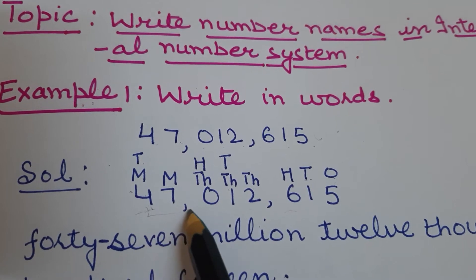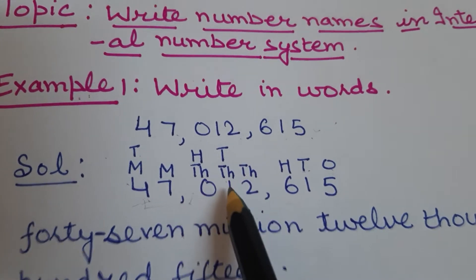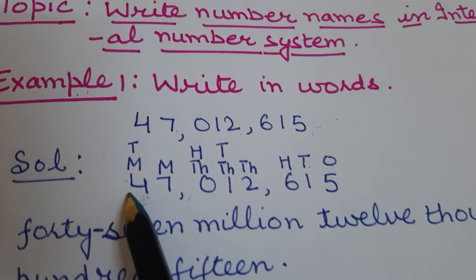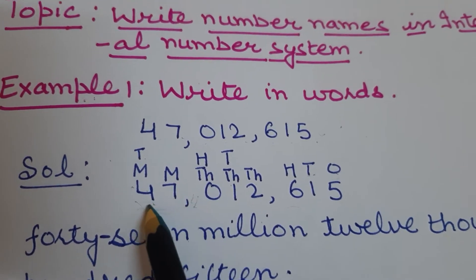We will write according to the periods. Then your sum will never be wrong. This is the first period, million period.